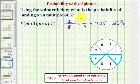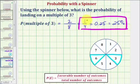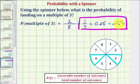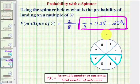So if the probability is one-fourth, this means theoretically we expect to land on a multiple of three one out of every four spins. As a percentage, we expect to land on a multiple of three twenty-five percent of the time, or twenty-five times out of one-hundred. I hope you found this helpful.